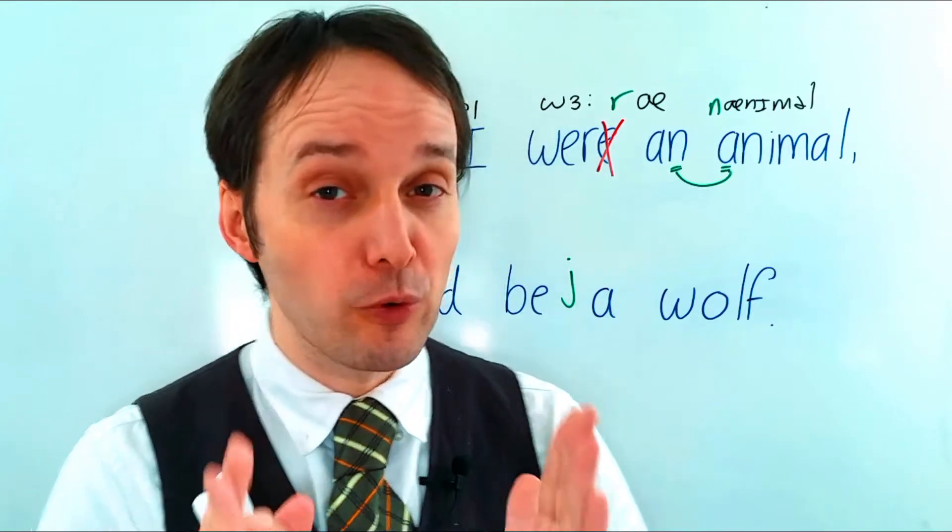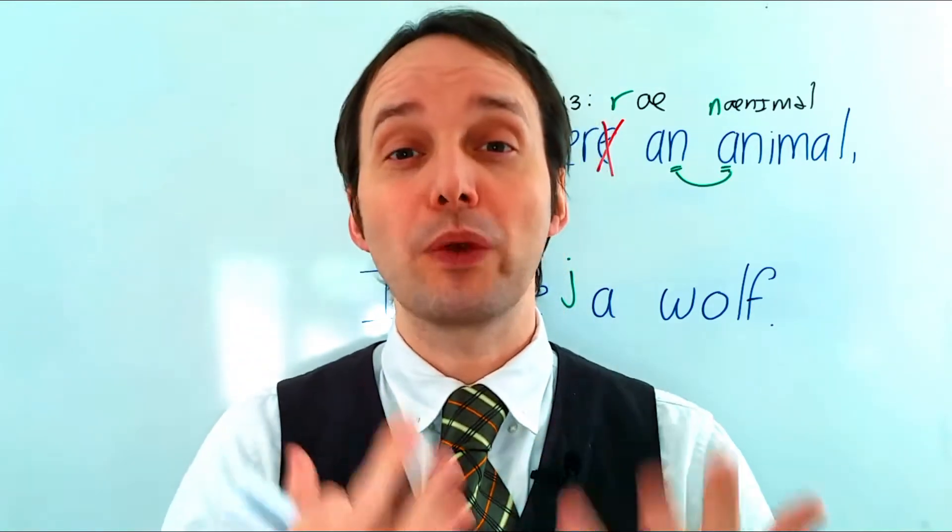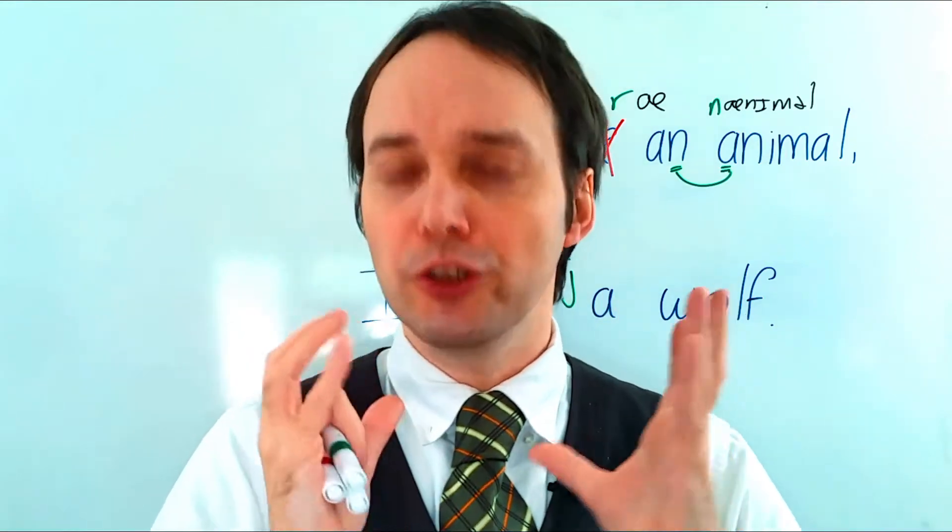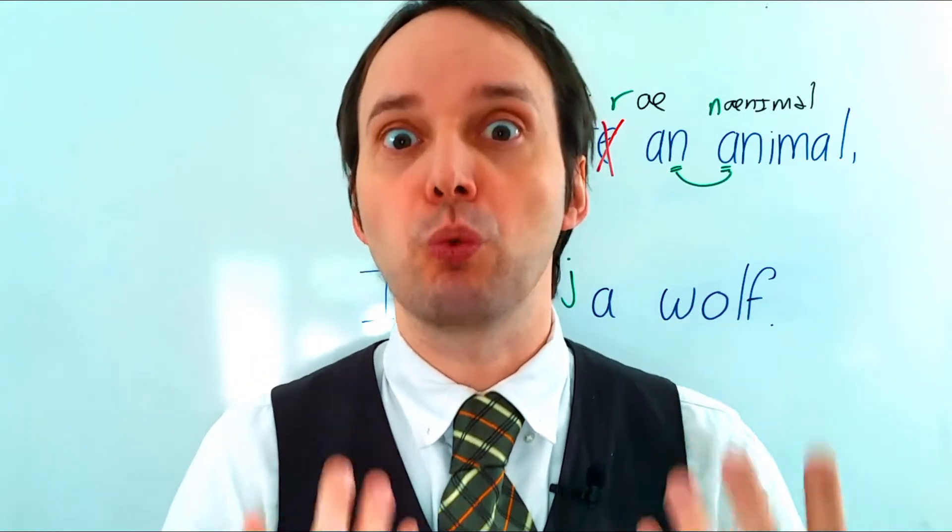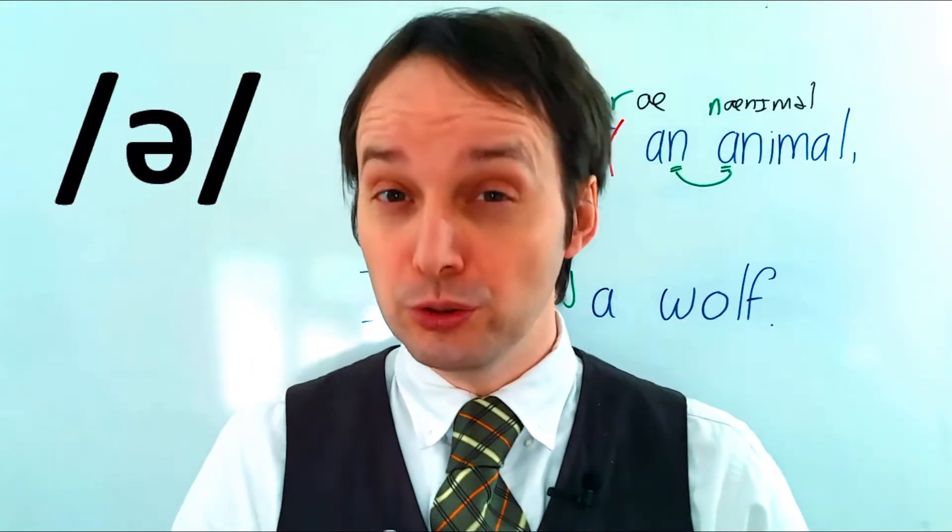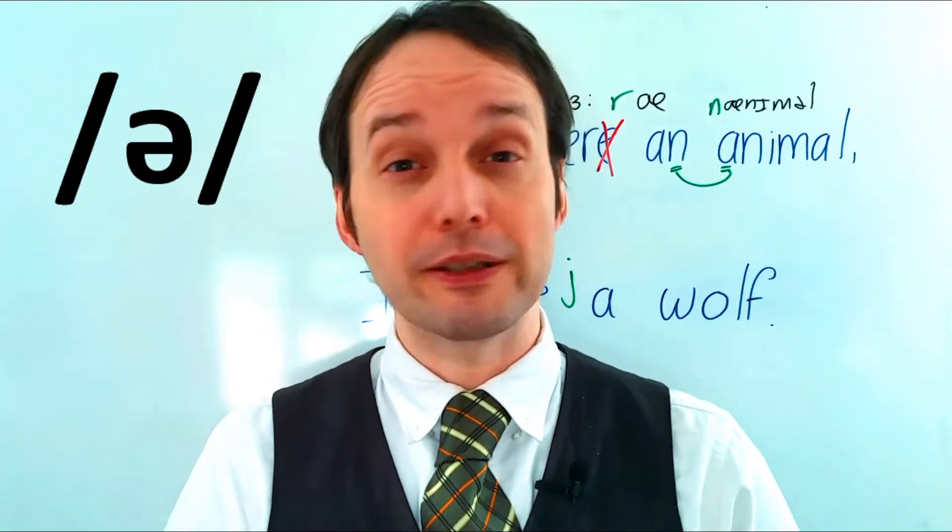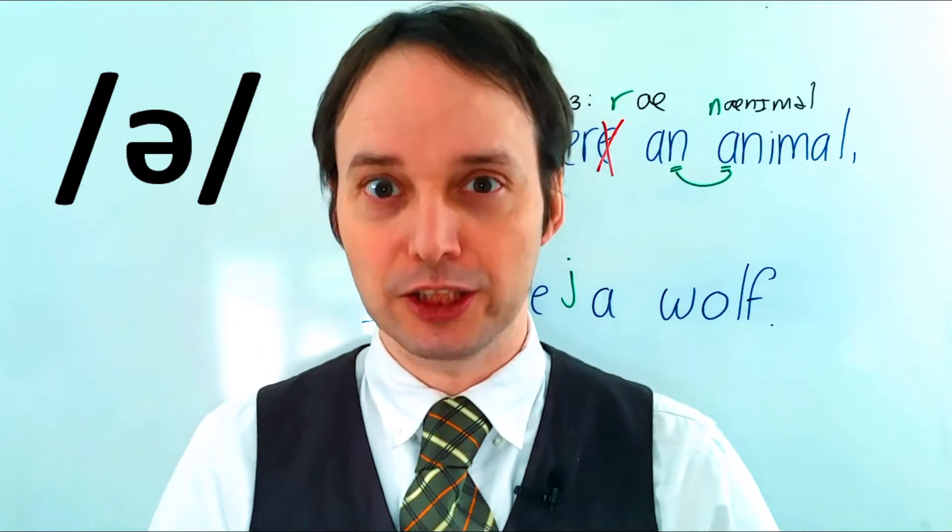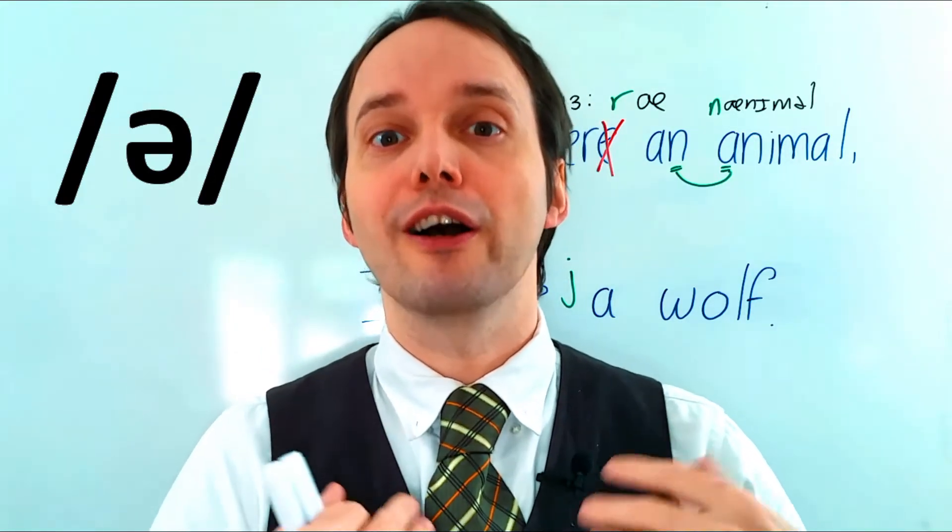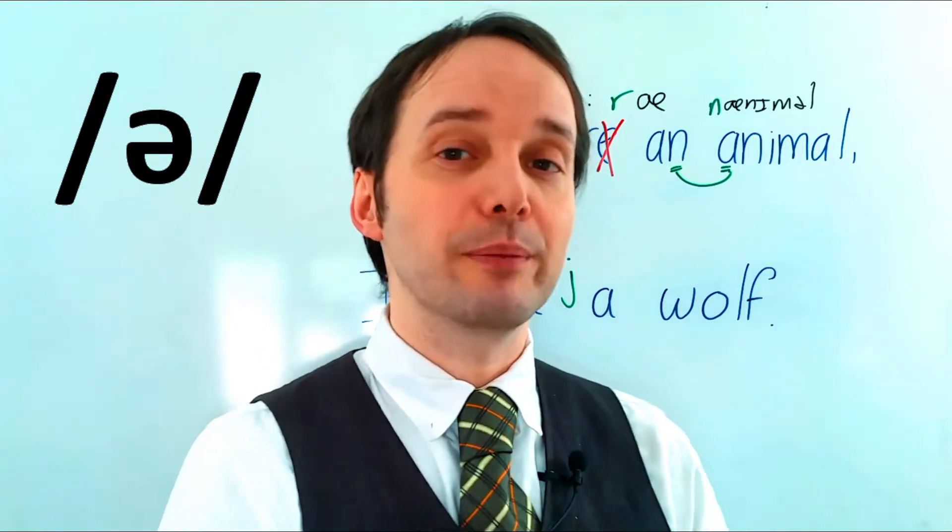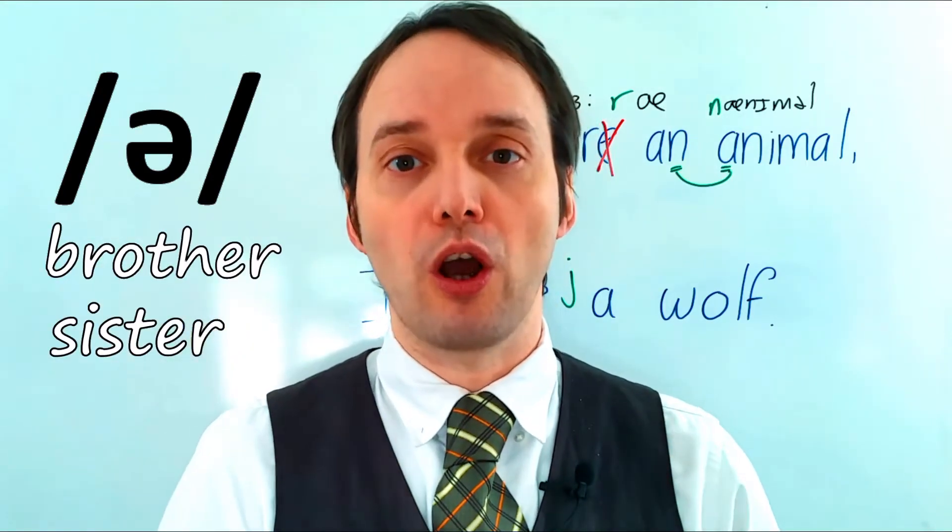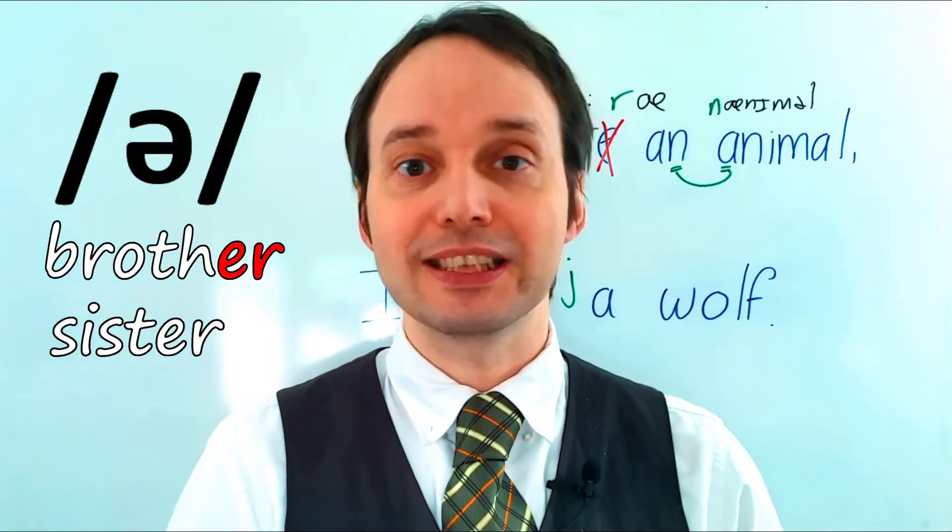The key to understanding weak forms is that typically a weak form will be made using one of two sounds. Usually it's the schwa sound, who you should really get to know very well because he will be your best friend learning English. So the schwa is the 'uh' sound. For example, when we say brother or sister, the ER at the end is a schwa. It's brother, sister.